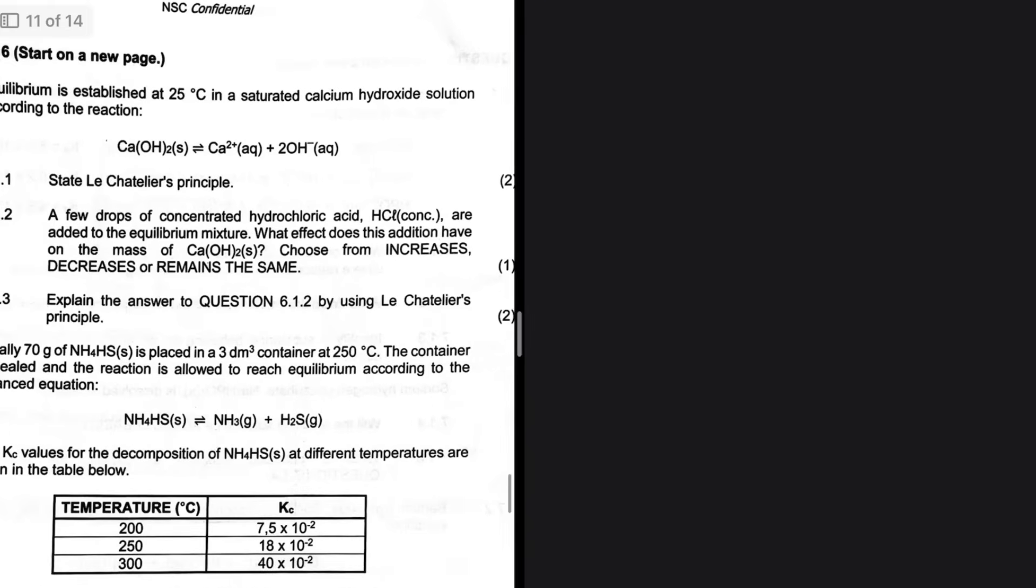A few drops of concentrated hydrochloric acid are added to the equilibrium mixture. What effect does this addition have on the mass of Ca(OH)2? Choose from increases, decreases, or remains the same.